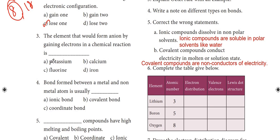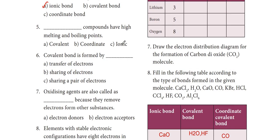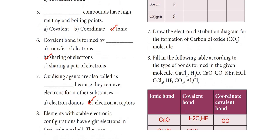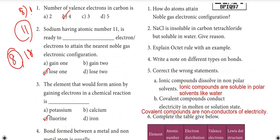Third: the element that would form an ion by gaining electrons in a chemical reaction is fluorine. Fourth: bond formed between a metal and non-metal atom is usually an ionic bond. Fifth: ionic compounds have high melting and boiling points. Sixth: covalent bond is formed by sharing of electrons. Seventh: oxidizing agents are also called electron acceptors because they remove electrons from other substances. Eighth: elements with stable electronic configuration have 8 electrons in their valence shell — they are noble gases.